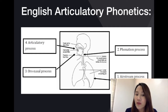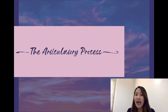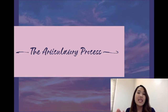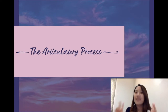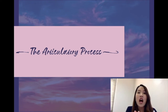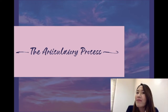We already talked about the oral-nasal process, so in this video clip we are going to talk about the articulatory process. The articulatory process, as I told you, means how to make sounds. If we talk about articulatory process in English, we can divide it into two types: consonant sound and vowel sound. In this video clip, we are going to focus only on the articulatory process of consonant sounds. Vowel sounds will be covered in the next clip.